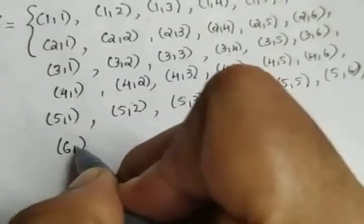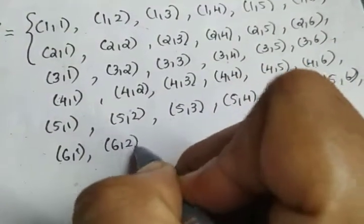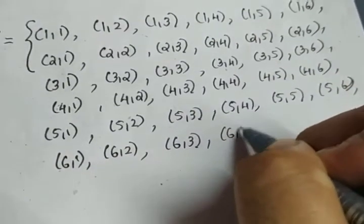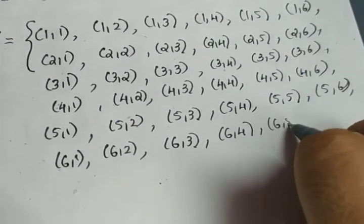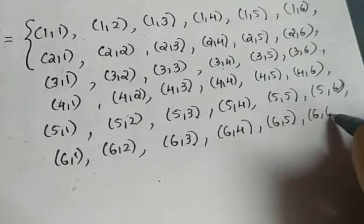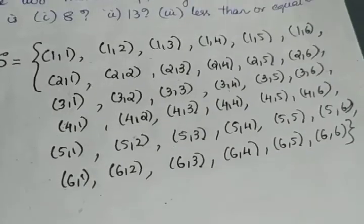And the last row: 6,1, 6,2, 6,3, 6,4, 6,5 and 6,6. So the total number of outcomes is 36.